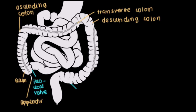The descending colon does what it says: it descends. Then the last part of our large intestine, where we're kind of flipping around and going upwards in sort of an S shape — that last part is called the sigmoid colon, sigmoid because it's got an S shape to it.